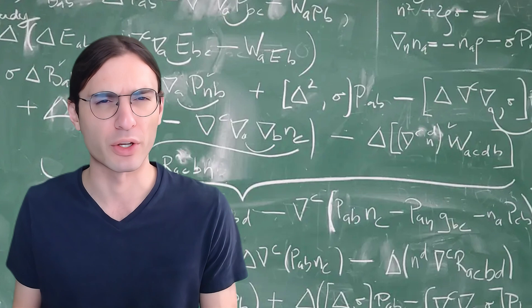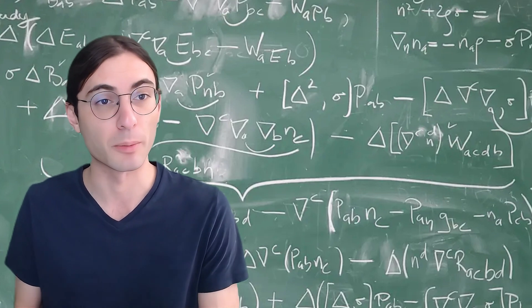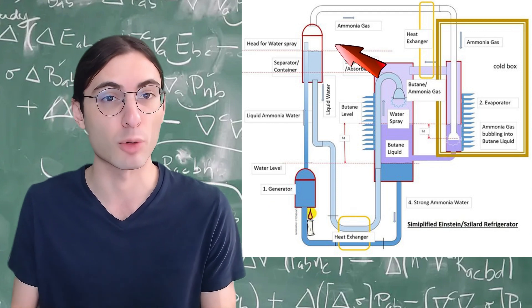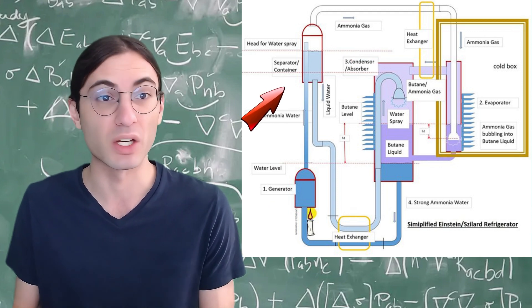Their refrigerator used three working fluids: butane, ammonia, and water. Initially, the ammonia is mixed with the water and it's heated. This causes some of the ammonia to leave in the form of a gas, reducing the amount of ammonia in the water.